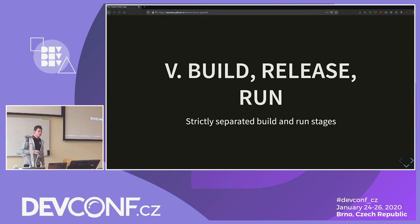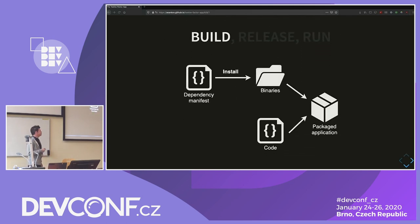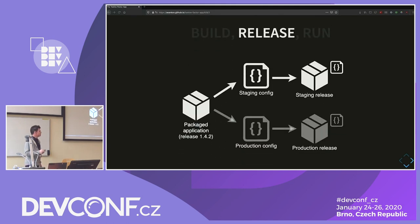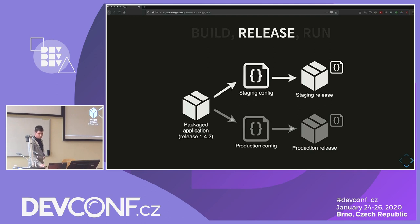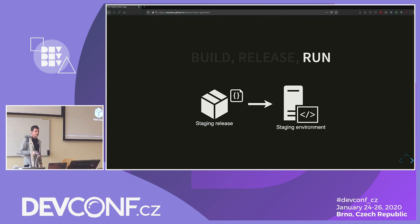The fifth factor is called build, release, and run, and it concerns your build and release pipelines. You should have strict separation between these three phases. The build phase is when we take our dependency manifest and code, install dependencies, and build them together into a runnable package. The release phase is when we take that runnable package, deploy it to the given environment, source it with configuration, and it is ready to run. The run phase is when it is already running and our clients can query it. Ideally you would have one button that does all three, but under the hood this is how they should be structured.